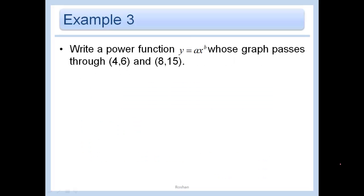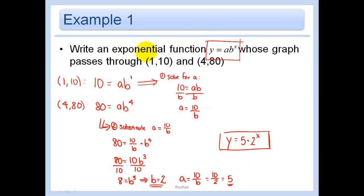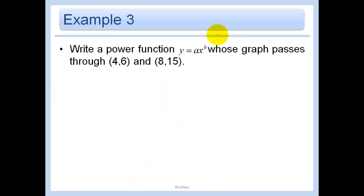Write a power function of the form y equals ax to the b. Oh look, this is a power function. You see that? Because this one is to a power. X is the base and we are going to a power, whereas back here I was doing an exponential function because the x is in the exponent. Here we are doing a power function, y equals ax to the b, whose graph passes through these two points.